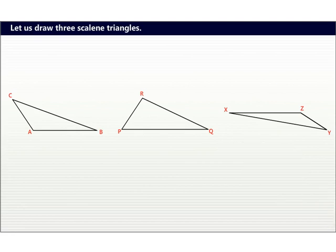In triangle ABC, A is the largest angle and side CB is the longest side. In triangle PQR, R is the largest angle and side PQ is the longest side.